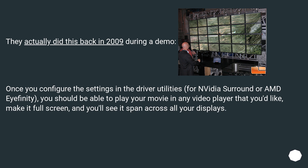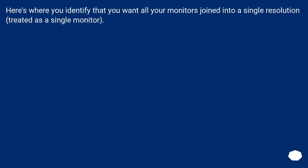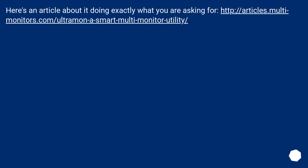Once you configure the settings in the driver utilities for Nvidia Surround or AMD Eyefinity, you should be able to play your movie in any video player you'd like, make it full screen, and you will see it span across all your displays. Here's where you identify that you want all your monitors joined into a single resolution, treated as a single monitor. There's also an article about doing exactly what you were asking for at the linked URL.